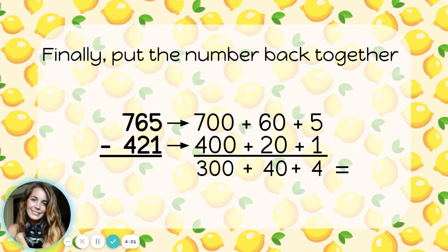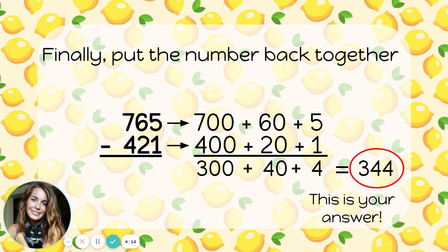Now, just like with partial sums, I need to put the number back together. My answer is in expanded form. 300 plus 40 plus 4. When I put that back together, I get the number 344. This is the answer to my subtraction problem.